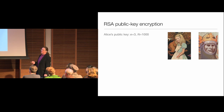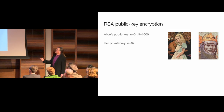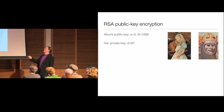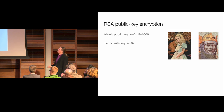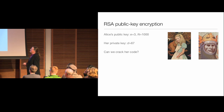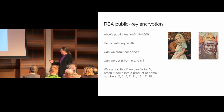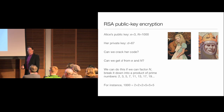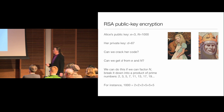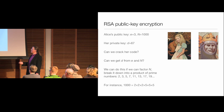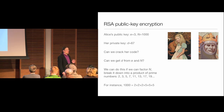How might we crack this? An eavesdropper would like to figure out that if Alice's public key is 'raise things to the third power and take mod 1000,' her private key is 67. The question is, how do we find the decryption exponent D if we're told E and N? It turns out you can do this if you can factor the number N into primes. For instance, 1000 is 2 × 2 × 2 × 5 × 5 × 5. So if you can take large numbers and break them down into their prime factors, then you can break RSA public key encryption.